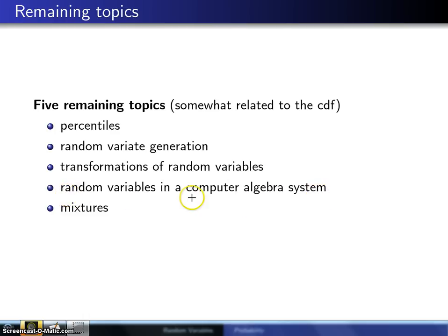The fourth topic is random variables in a computer algebra system. We'll find that these computer algebra systems are quite helpful at manipulating random variables. And then the last topic is mixtures.